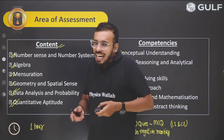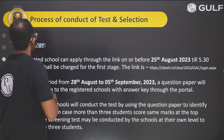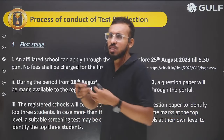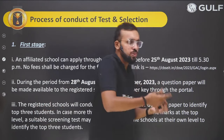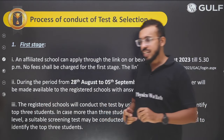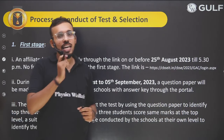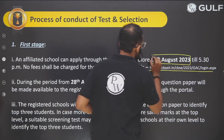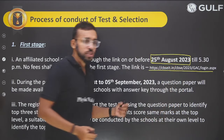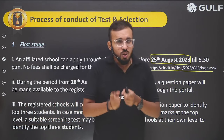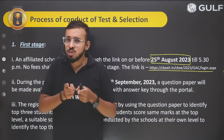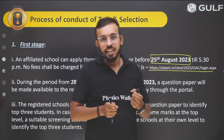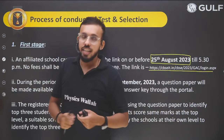Now let's discuss the registration process. First, your school will have to apply at the official link by 25th August 2023, up to 5:30 PM IST. The first round is absolutely free of cost. Make sure you ask your school management or authorities to register on the official link before this deadline.